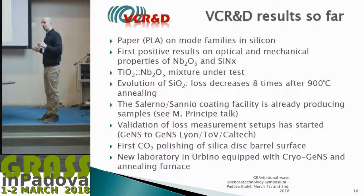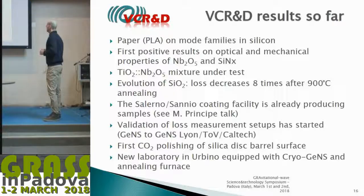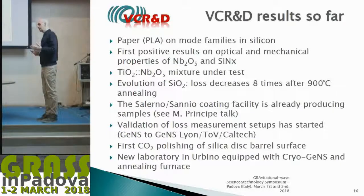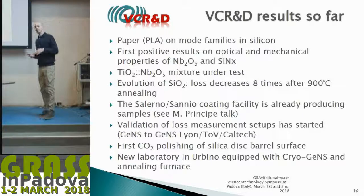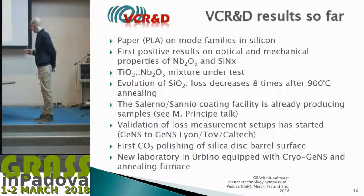GENSO appears very reproducible, but there is a problem when losses are very low for silica samples—due to aging of silica, not a limitation of the suspension. We also tested polishing of the barrel surface, as the disc barrel usually comes unpolished. Mechanical polishing and CO2 laser polishing should reduce losses and stabilize them over time by avoiding aging, though this is still under study. A new laboratory in Urbino with GENSO, and eventually a cryostat for cryogenic measurement of coating loss angle, is planned.